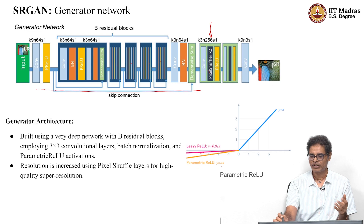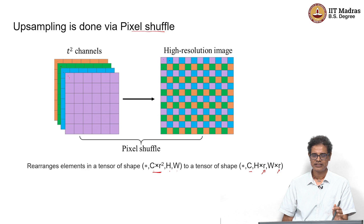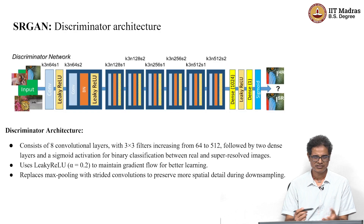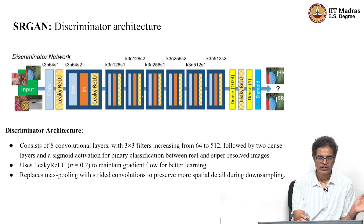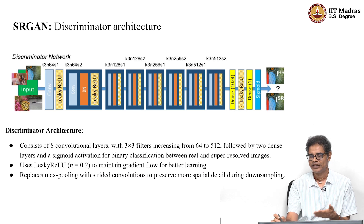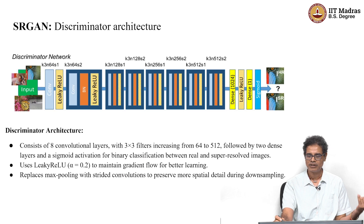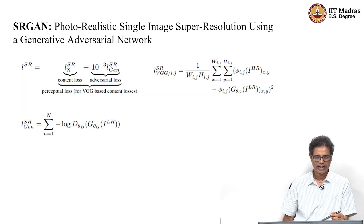After pixel shuffle, some convolution layers are applied and then we get the super-resolved image. The discriminator is simpler: it has multiple blocks using strided convolution instead of max pooling, then passes through a dense MLP layer, and finally has a sigmoid at the end for classification.